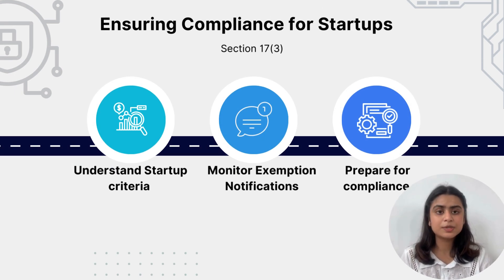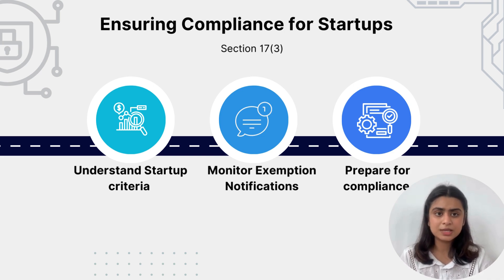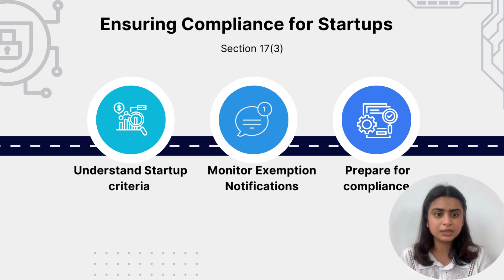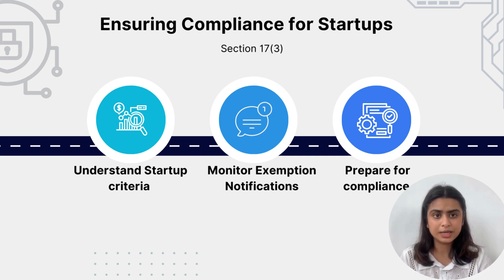Let's talk about Section 17 Subsection 3, where we have to ensure compliance for startups. First, we have to understand the startup criteria — verify that the organization meets the criteria for being recognized as a startup under the central government's notifications and definitions. For example, Zomato verifies its status as a startup under the central government so it can take advantage of any relevant exemptions while ensuring its data practices align with the DPDP Act.